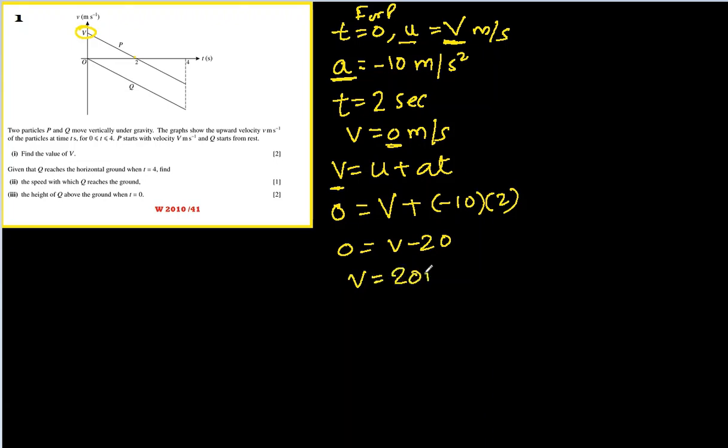Let's go to the second part. Given that Q reaches the horizontal ground when t is four. When Q reached at this particular place it was on the ground. It was just dropped because initial velocity is zero, we can see that, and it reached ground here.